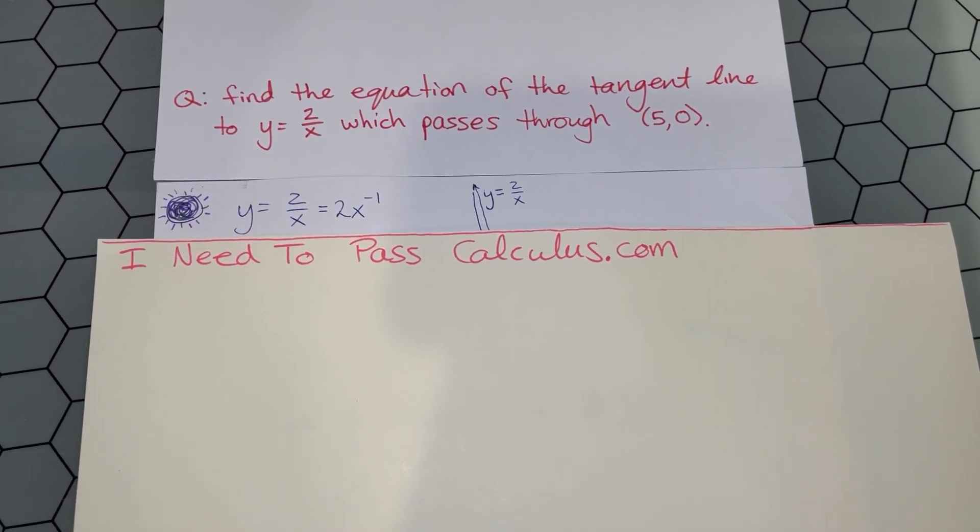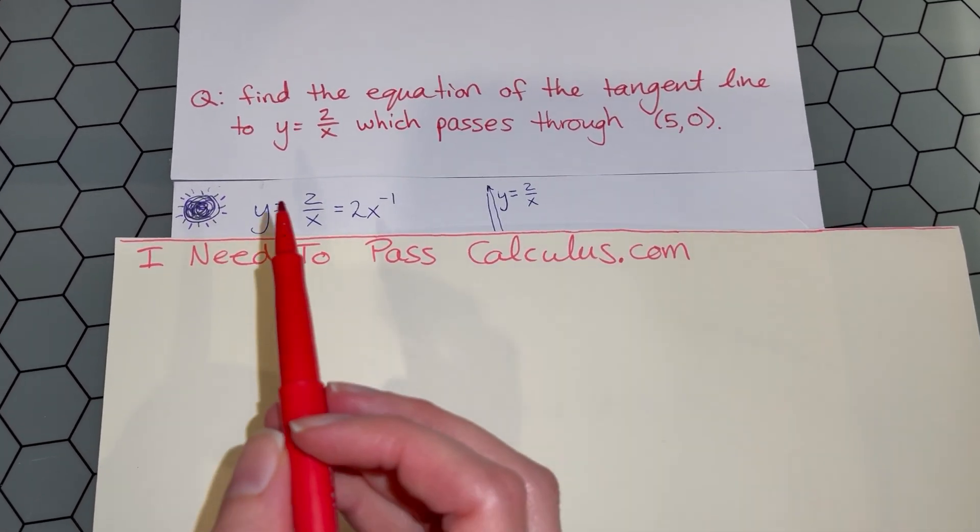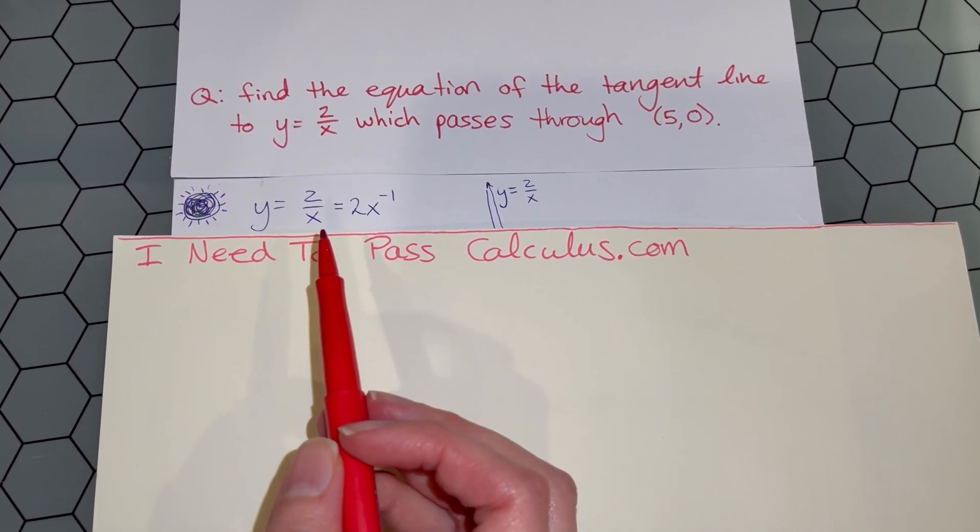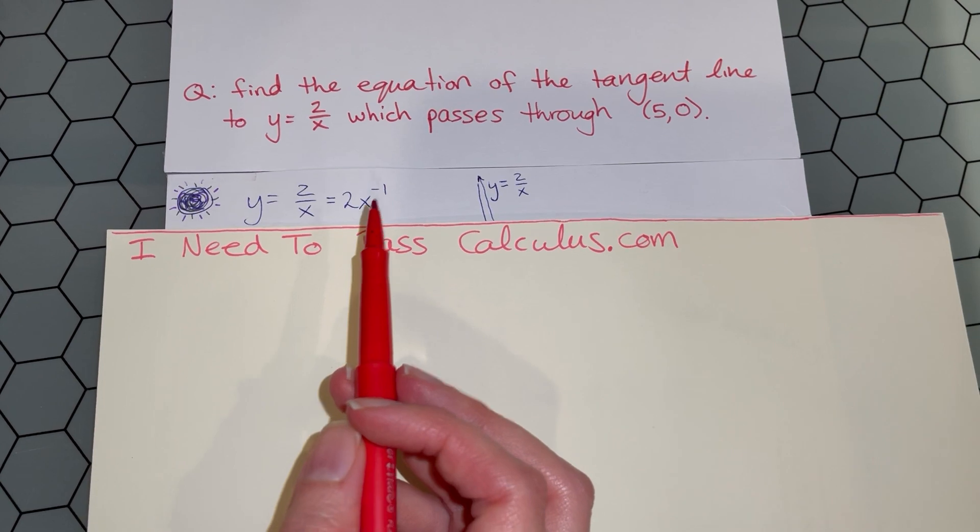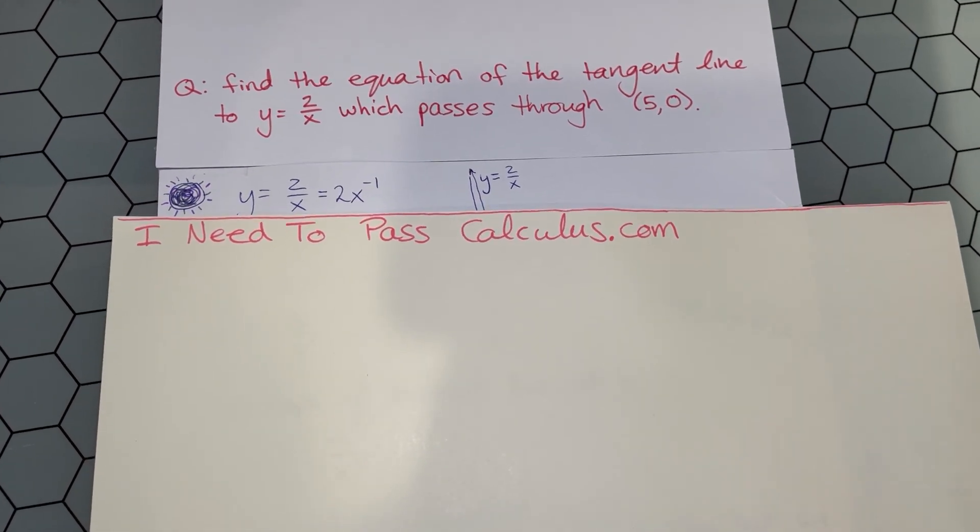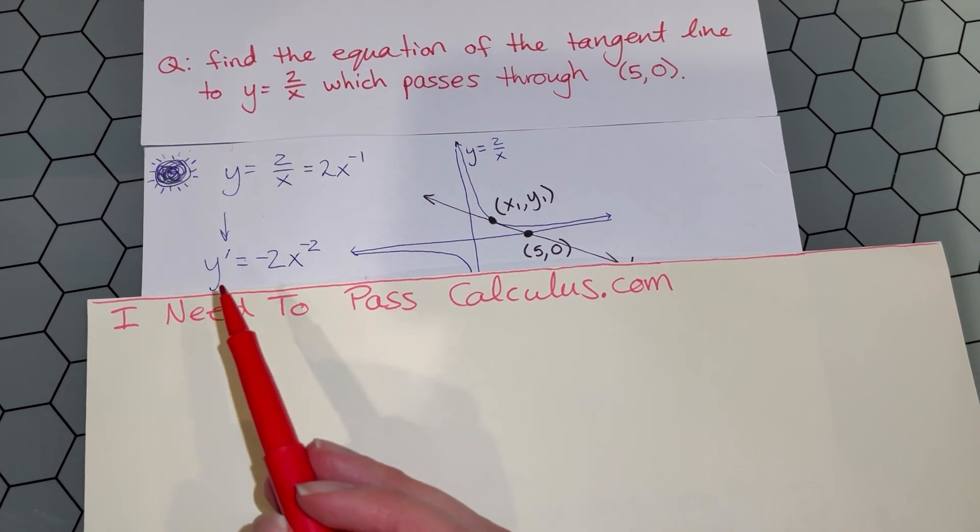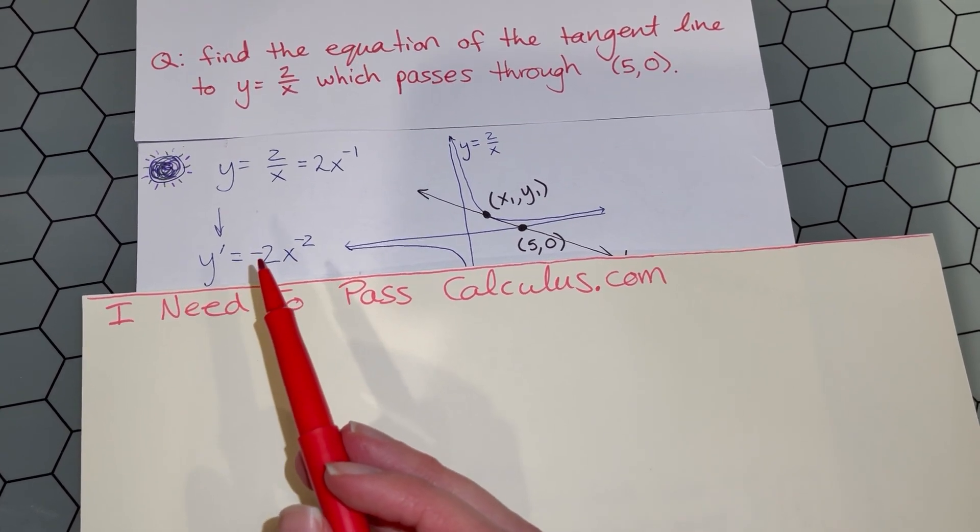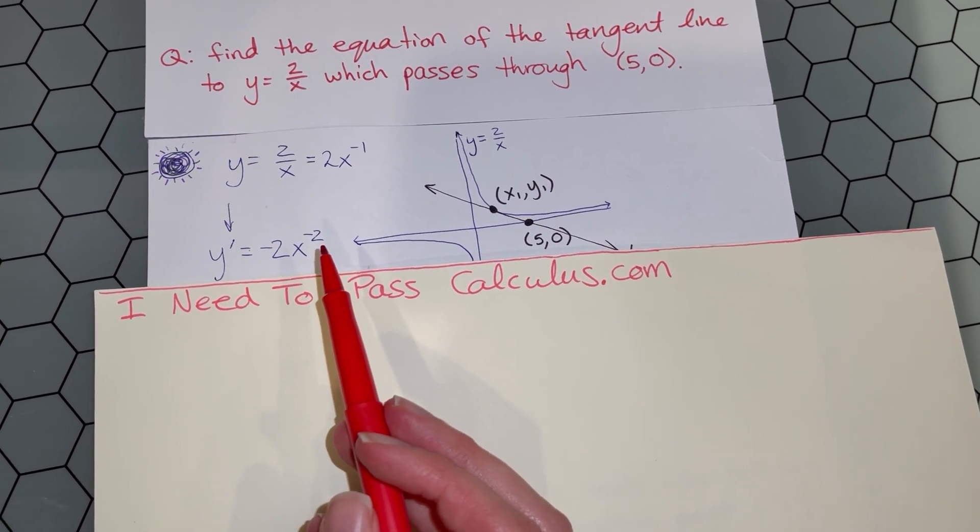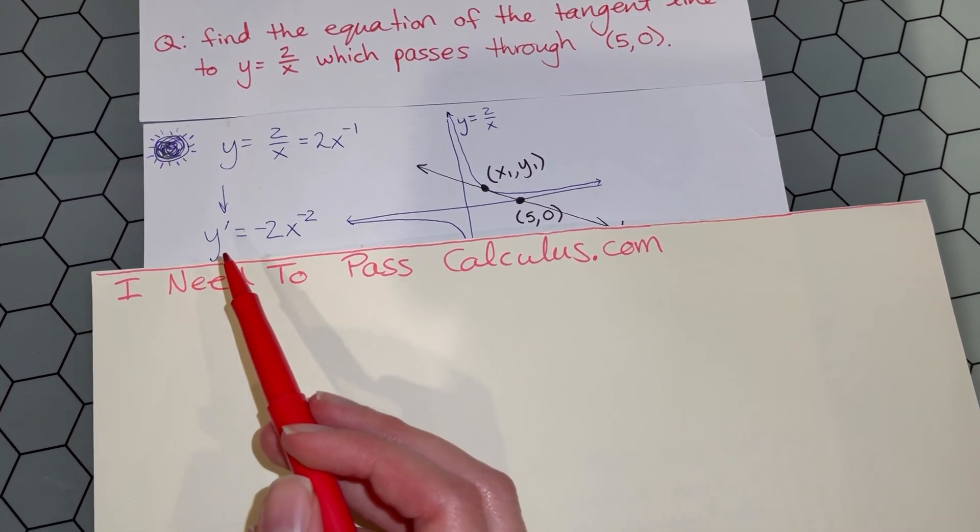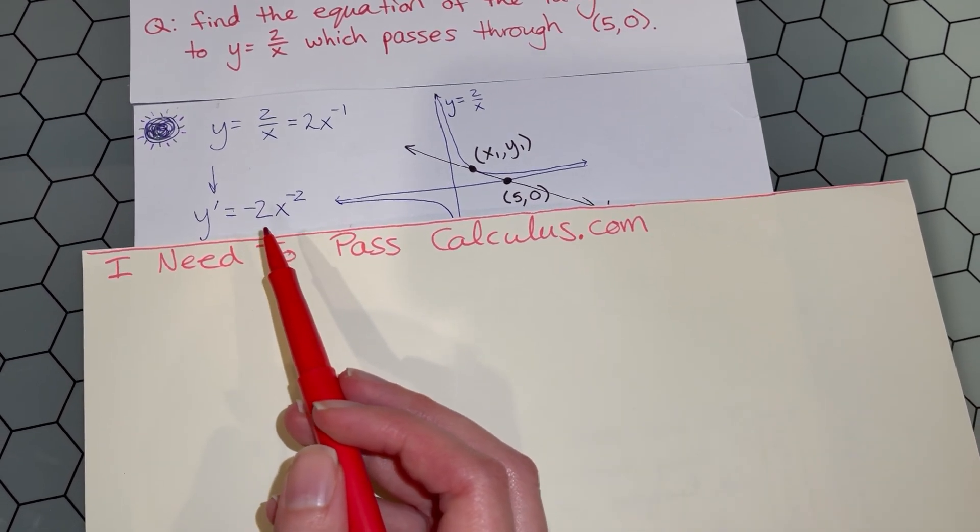For tangent line problems, if you're ever in doubt, start by taking the derivative. The curve is y = 2/x. To make it more derivative-friendly, I'll write it as y = 2x^(-1) so we can use the power rule. So y' = -1 × 2x^(-2) = -2/x^2. Here is our y', but we don't have an x value to plug in.